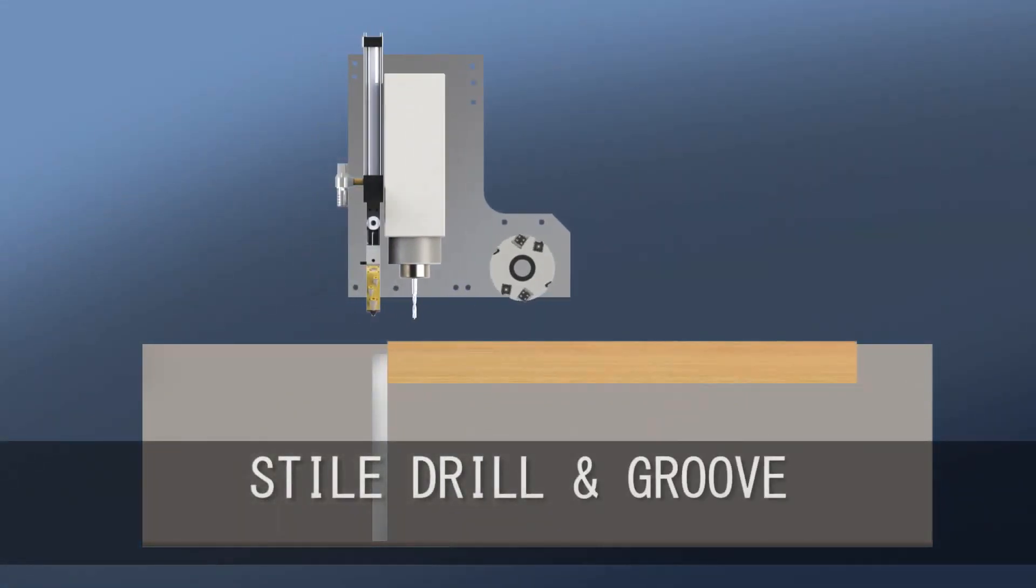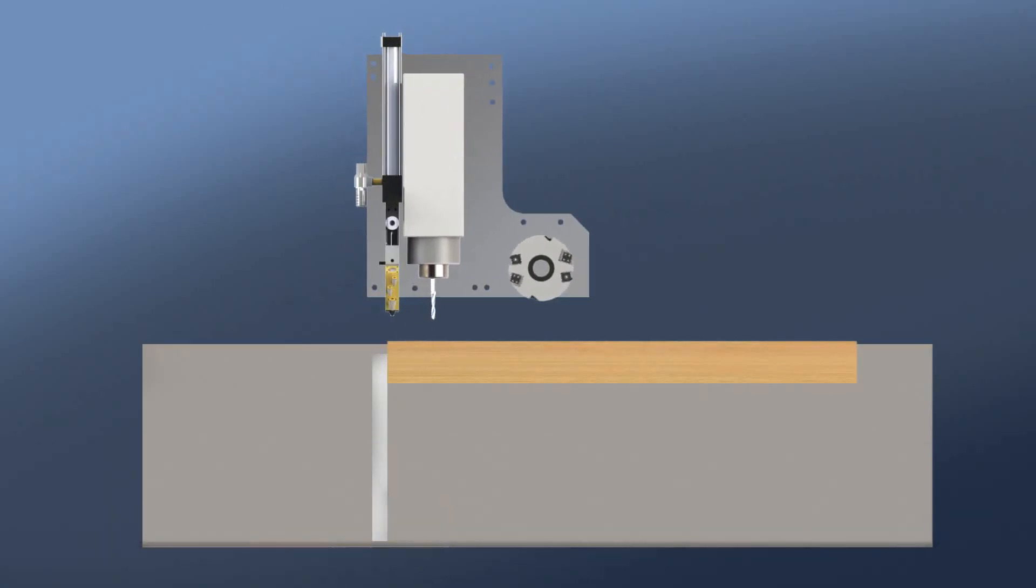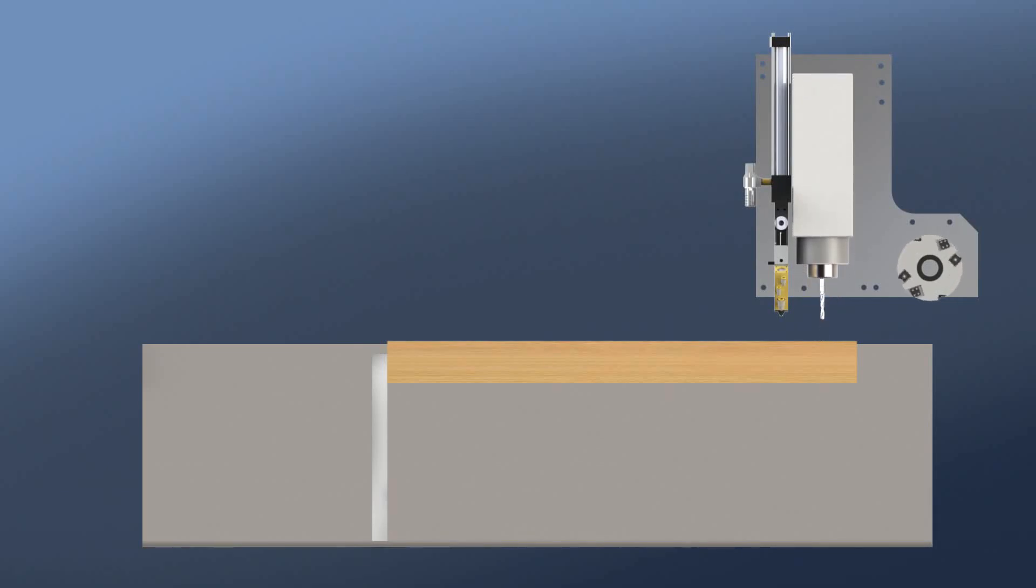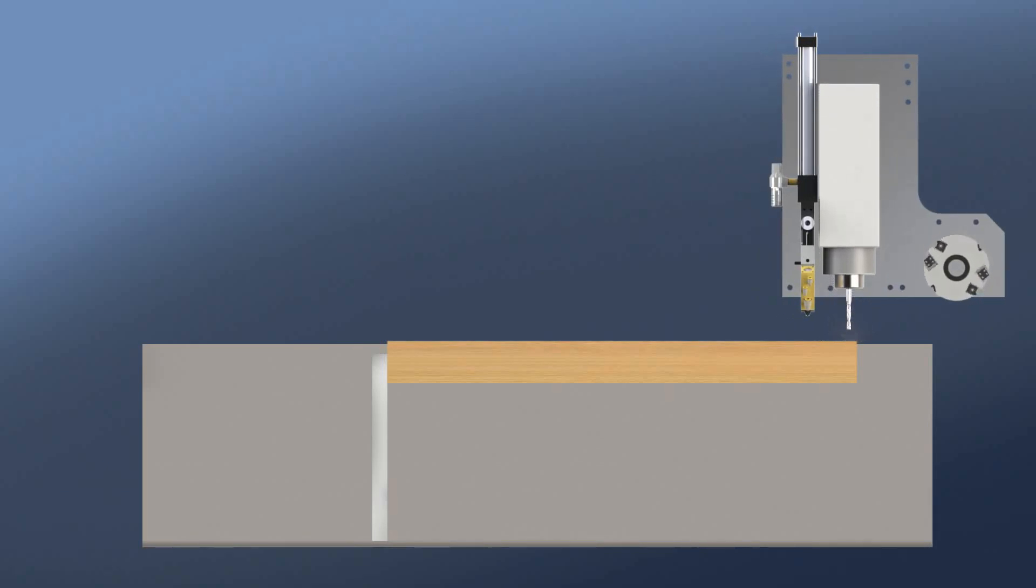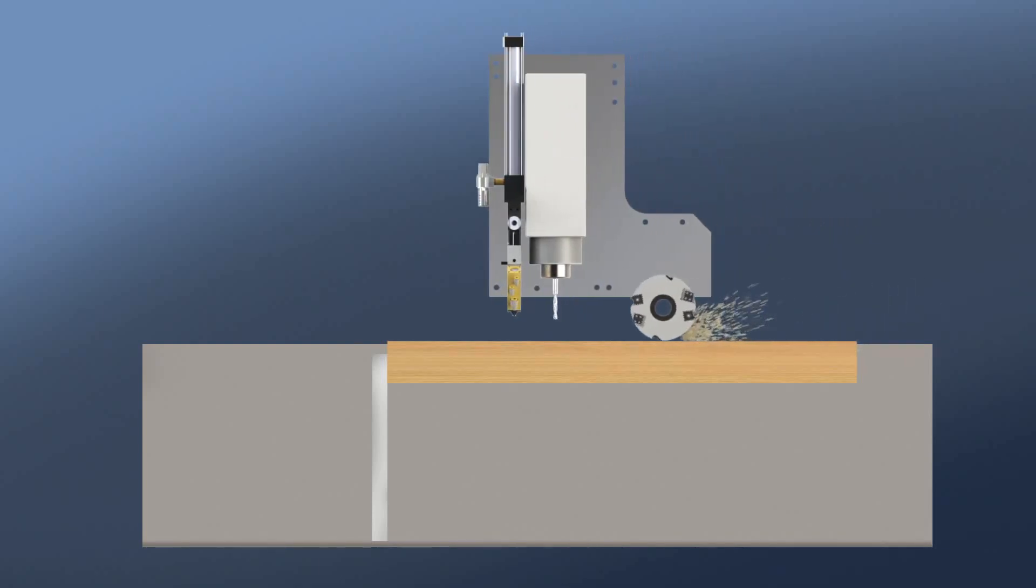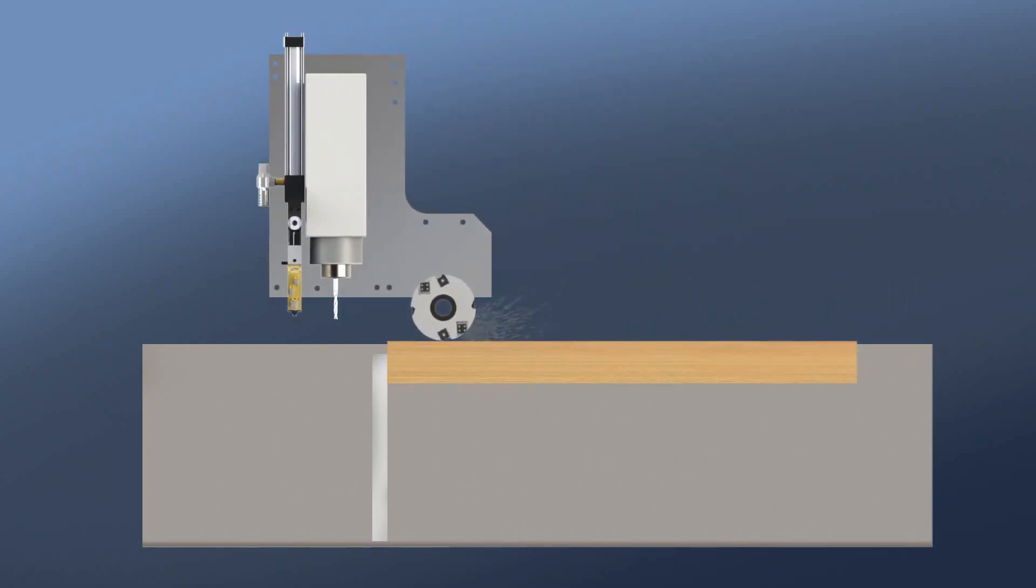When drilling dowel holes on stiles, the machine will drill all construction holes first, then it will cut a blind groove. This process can be done in any zone, and the user can also pendulum process dials between zones.